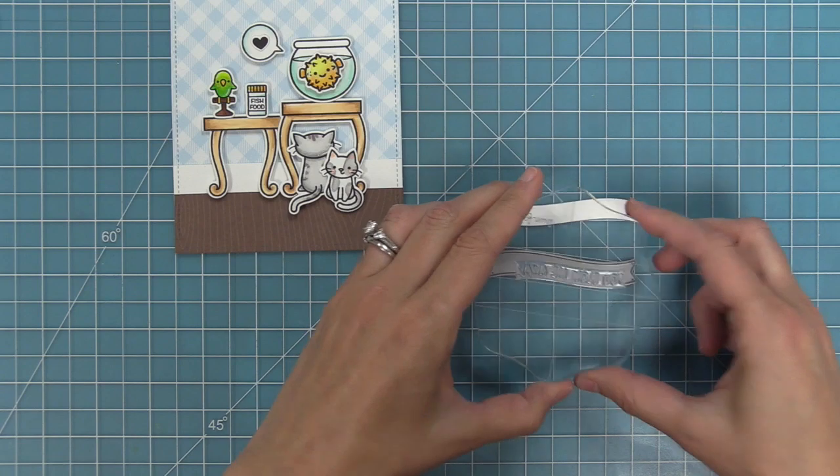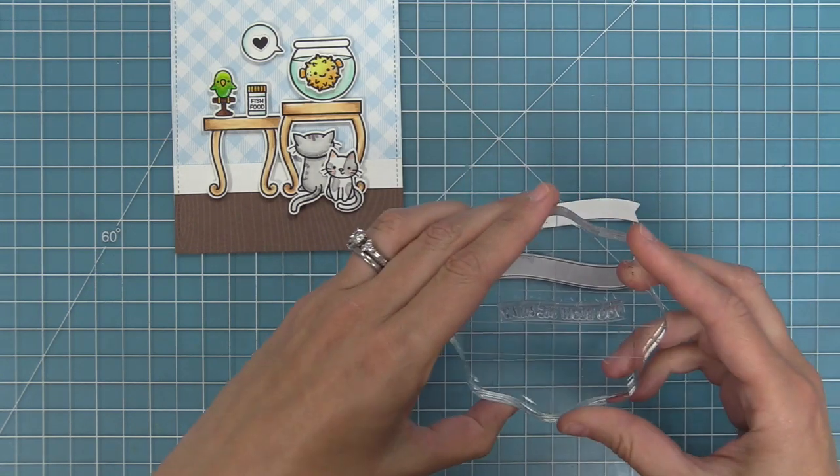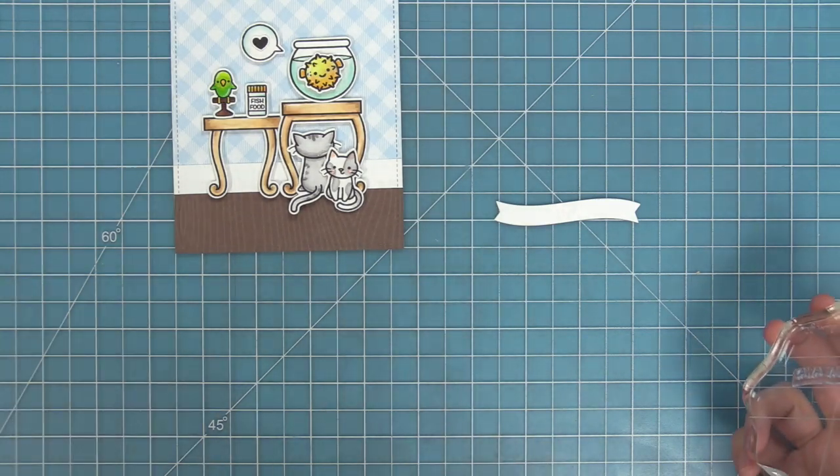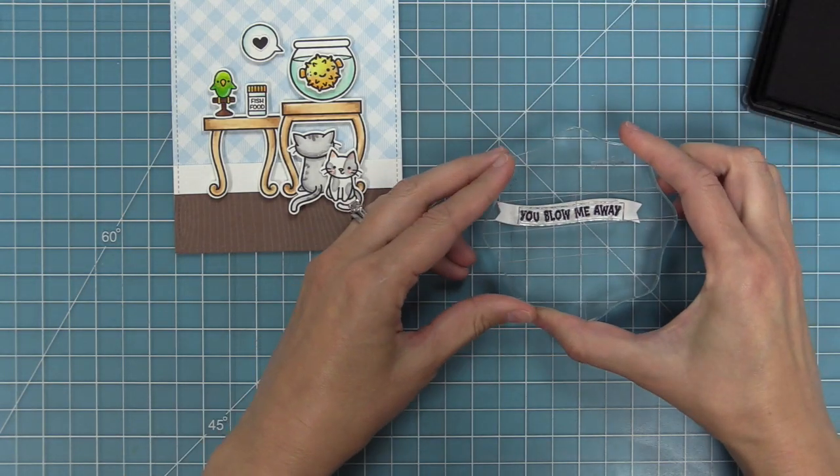I'm just going to curve my stamp because clear stamps will curve perfectly to match that curve. You'll see when I flip that block over, the curve is going to match the die cut perfectly. Then we can ink it up with some black licorice ink and you'll see how easy that is.